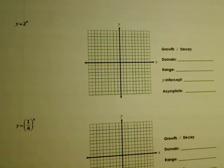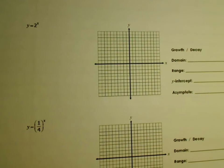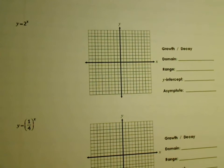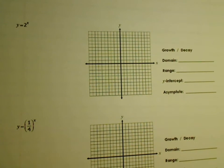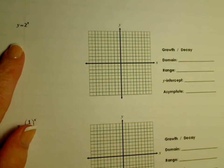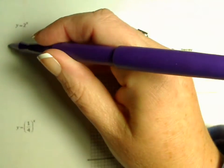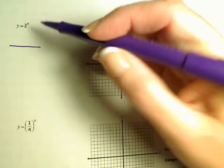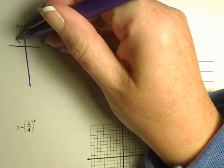Okay guys, the first thing we're going to do has to do with exponential functions. This is kind of like what we have done thus far, but I'm going to add a little bit. So the first part is just like what you've been doing — making the table and then graphing it. We're going to make the table first.